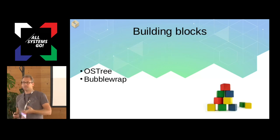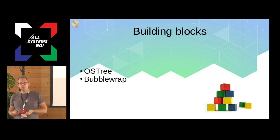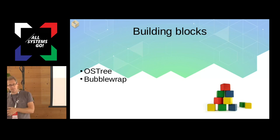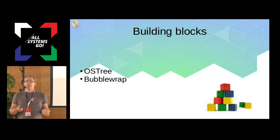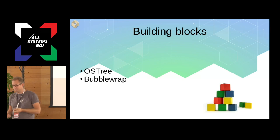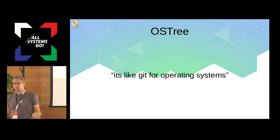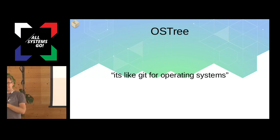To build Flatpak there are two major components that need to be explained before we can explain Flatpak itself — OSTree and Bubblewrap. Once we have a working knowledge of those, the rest of Flatpak is mostly trivial — just using these in the right way. OSTree — the short description — is like Git for operating systems.